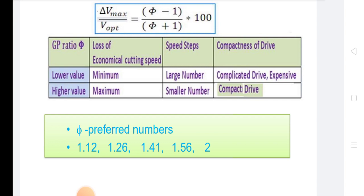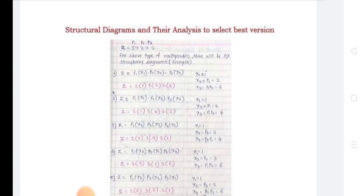In AP, the low speed range requires more steps for optimizing machining. In HP, the high speed range requires more steps for optimizing machining. For GP, the low speed range is better than AP but still requires few more steps for optimized machining. For AP, AT = (N_max − N_min) / (Z − 1), and N_Z = N_(Z-1) + AT. For HP, C = (N_max − N_min) / (N_max × N_min × (Z − 1)). For GP, φ = (N_max / N_min)^(1 / (Z − 1)).